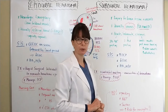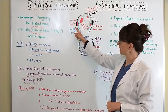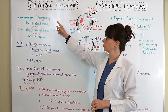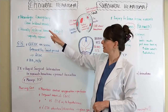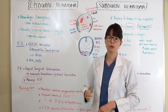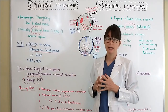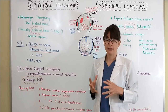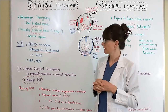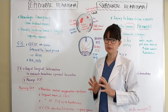An epidural hematoma occurs above the dura mater. It is a neurologic emergency because it involves a blood vessel tear — usually an artery that ruptures. Arteries are under much higher pressure than veins, so the bleeding occurs much faster and rapidly expands.